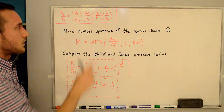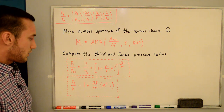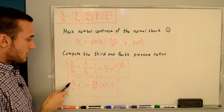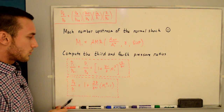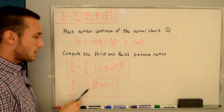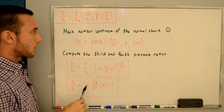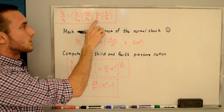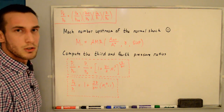Next we compute P2/P1, which is the static pressure ratio across the normal shock — a normal shock relation that is only a function of M1 and gamma. Plugging those in gives us the third pressure ratio.